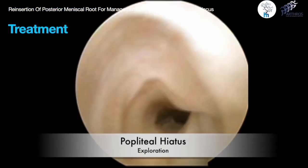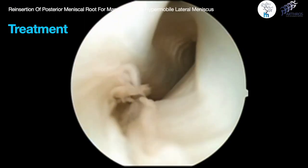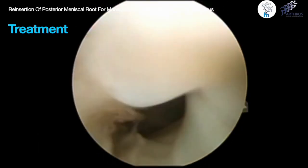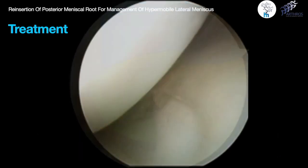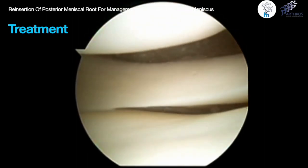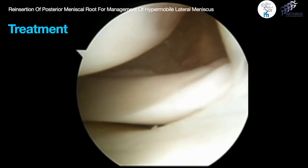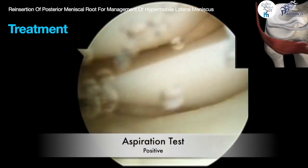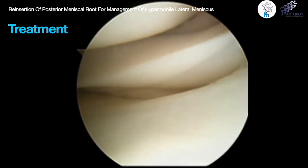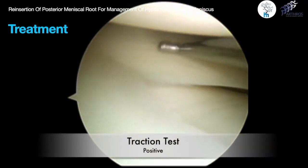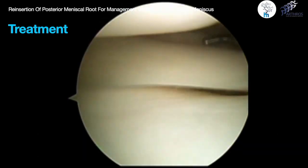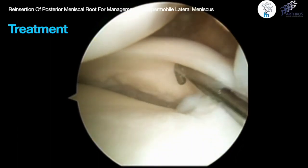In arthroscopy, we start by exploring the popliteal hiatus to visualize the popliteus tendon and the three fascicles. After exploring the medial compartment to rule out other pathologies, in the lateral compartment we can see a positive aspiration test, a positive traction test with the arthroscope, and cephalic laxity of the posterior root without disinsertion.